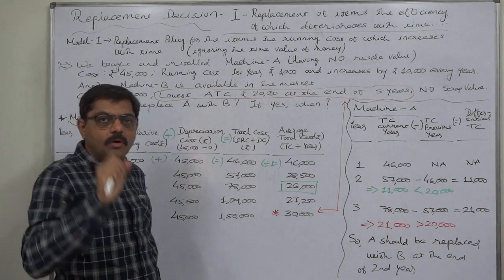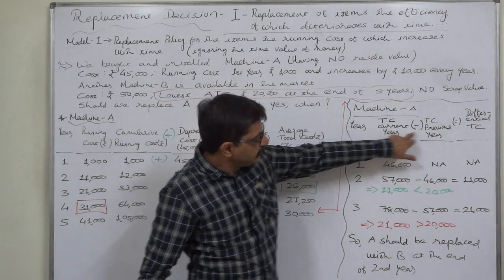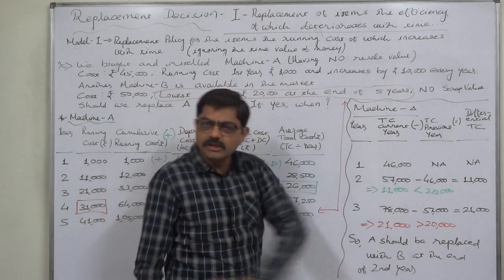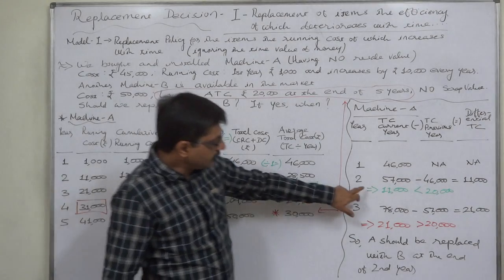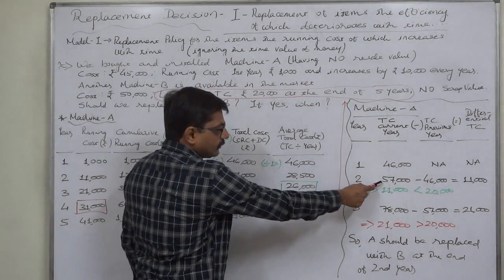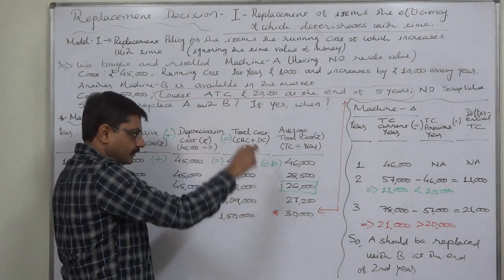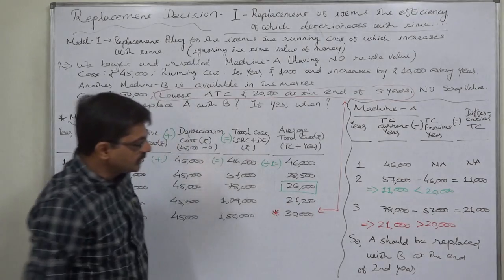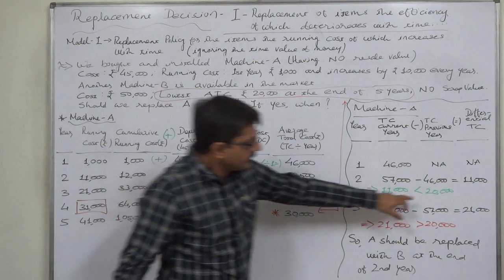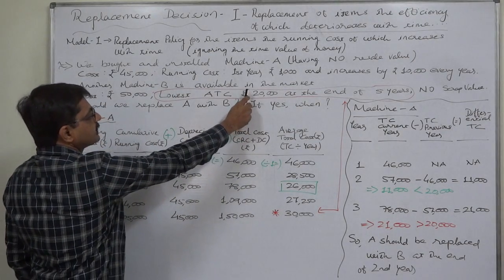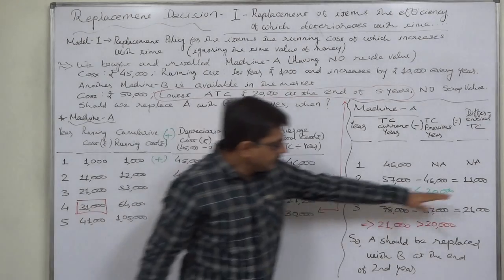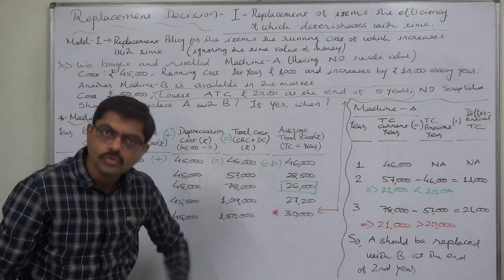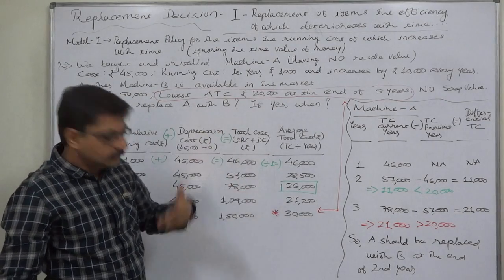Differential or incremental total cost = total cost of current year minus total cost of previous year. We do not calculate it for year one. For year 2: total cost of A is Rs. 57,000, previous year was Rs. 46,000, so incremental cost = Rs. 11,000. This is less than Rs. 20,000 — the lowest average total cost of B. Since the differential cost is less than B's average total cost, we should continue using A and make further comparisons.